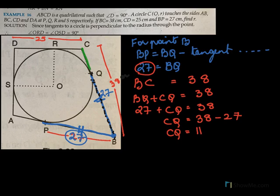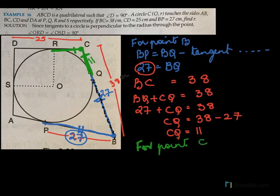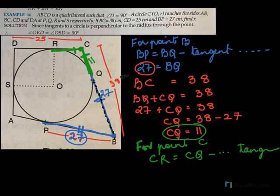So let's mark CQ equal to 11. But if you consider external point C, from here I can draw two tangents and CR will be equal to CQ. So for point C, CR equal to CQ — tangents from an external point are equal. I have already shown that CQ is 11, so CR is also 11.